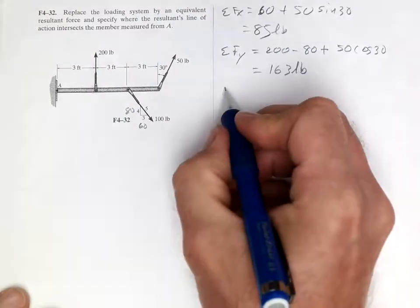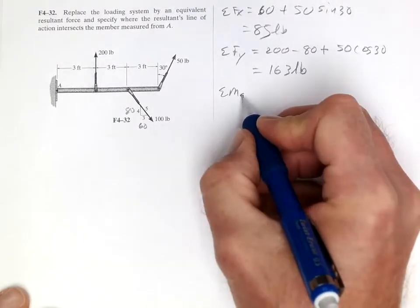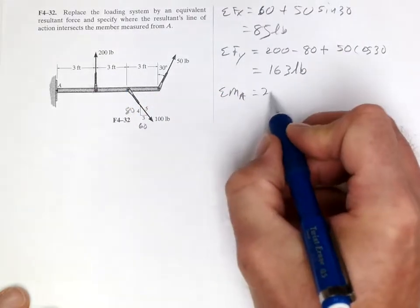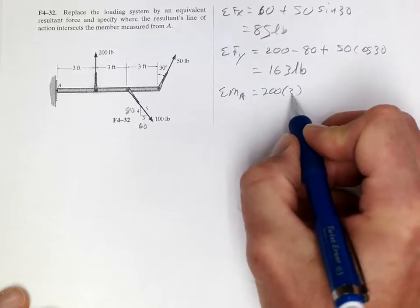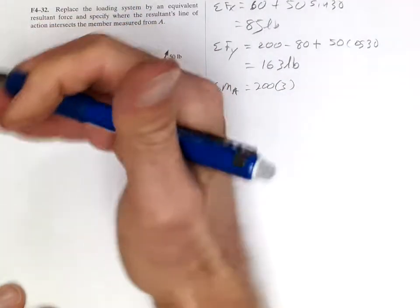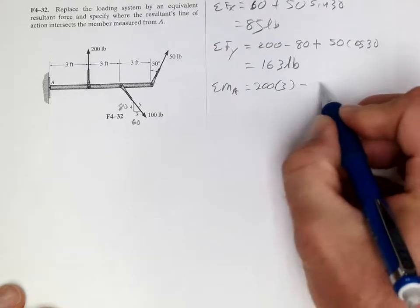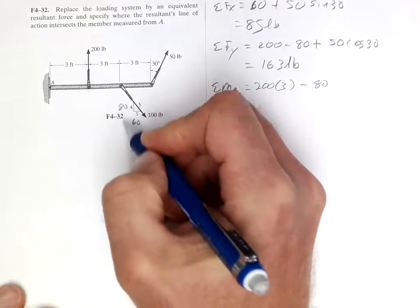Then if we sum the moments about A, we get 200 times 3, and that is causing positive rotation. Minus 80, going down, negative, times 6.